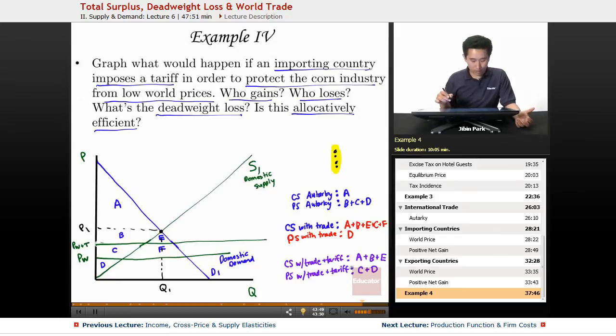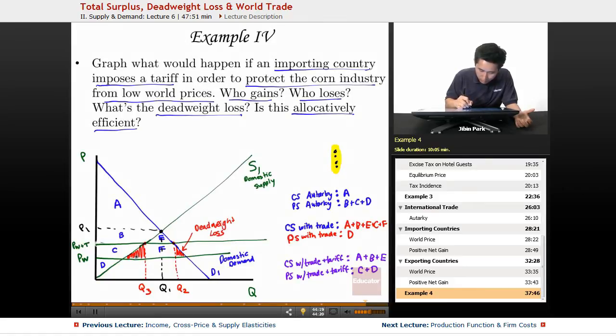Now this doesn't come without any consequences though, because when you have the tariff you have some consequences here. So what ends up happening is that you end up having less trade here. So let's call this Q2 here and Q3 here. And so this area here is the deadweight loss. So deadweight loss. So this area is also deadweight loss. Why? Because the new area of trade, let's say this is Q4 here, and this here is Q5 here.